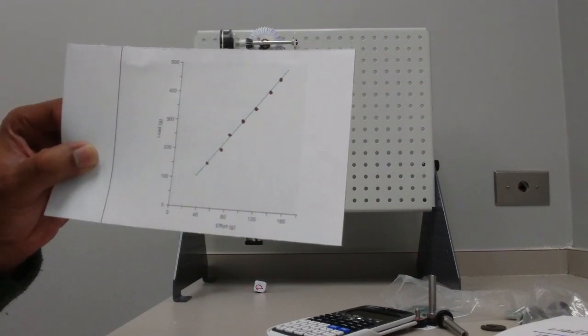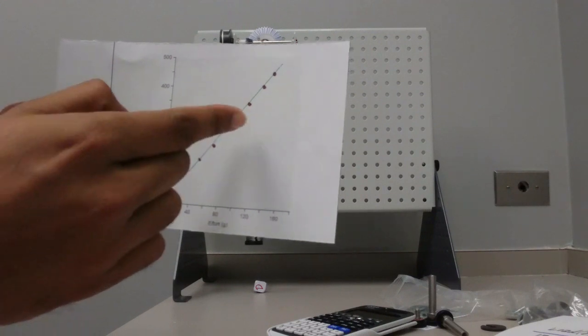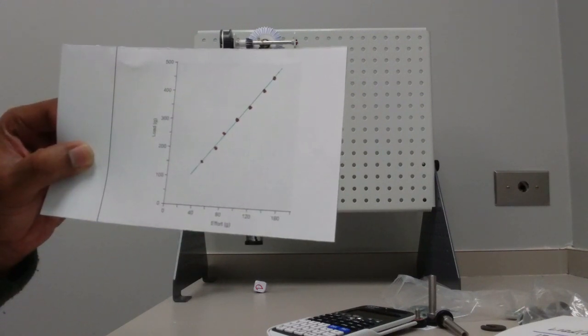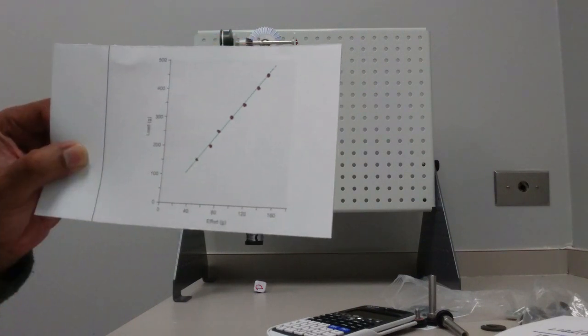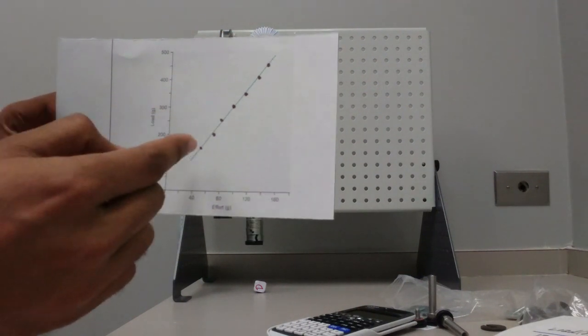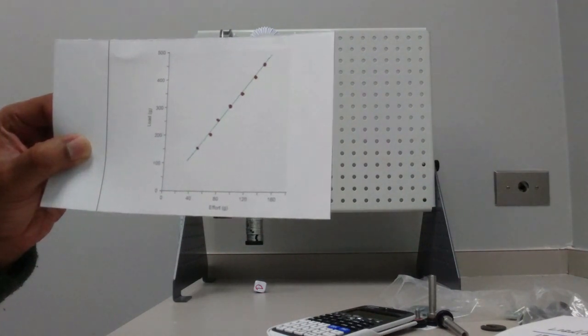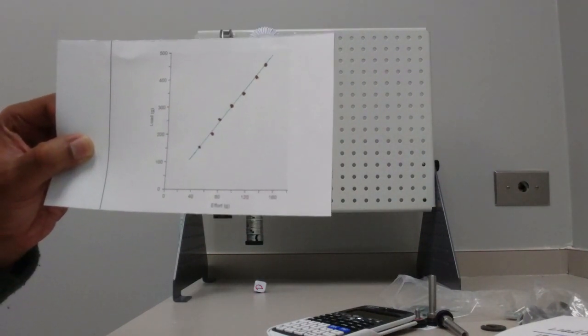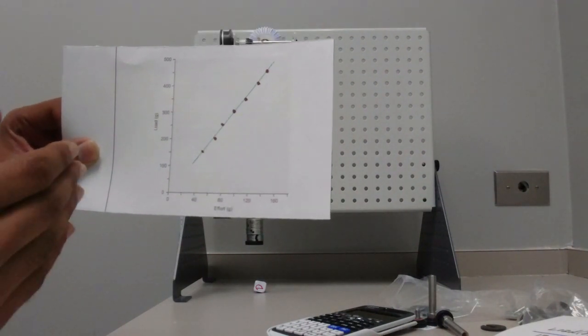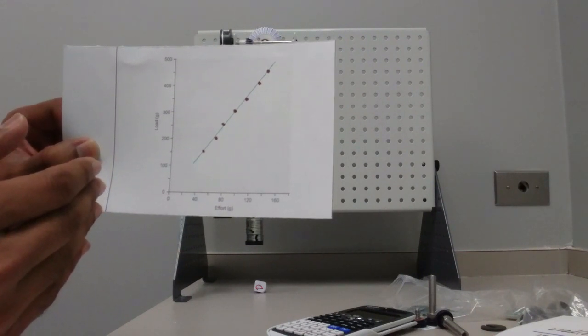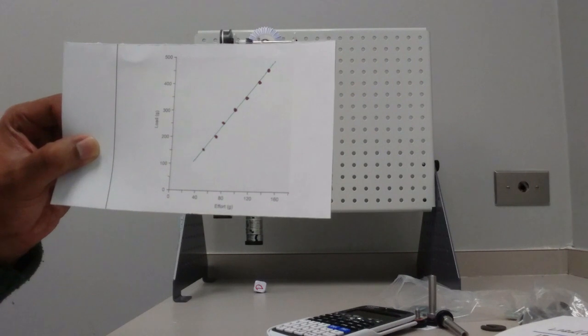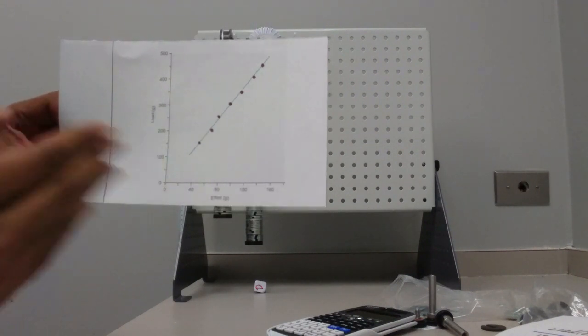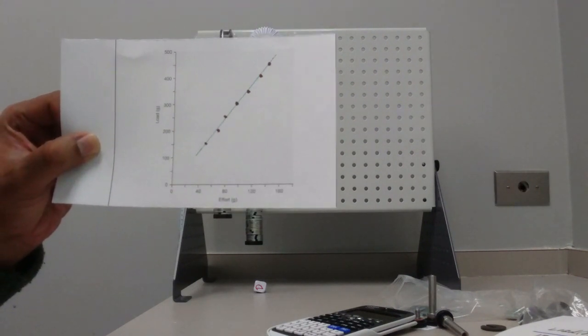And you can find the mechanical advantage by taking the slope. And you see from our data, the slope was almost three. Since we got a linear relationship, the slope almost everywhere should be around three. So what it tells us is that our test was almost accurate. Though we did a rough estimation of the loads, we got a linear plot, and that should be our expected plot that we should get when we plot load versus effort.